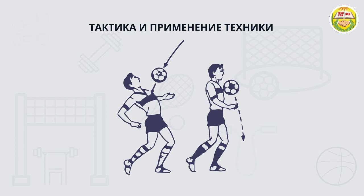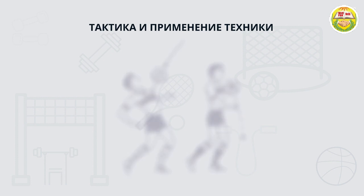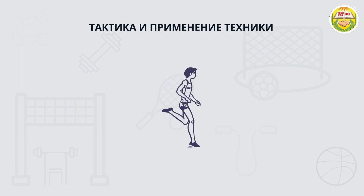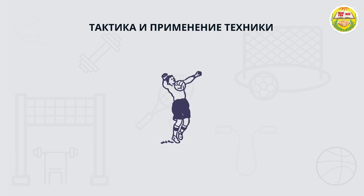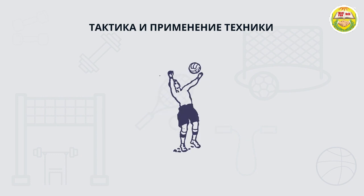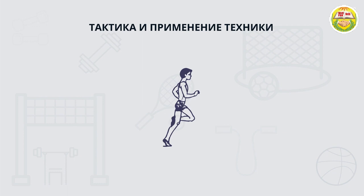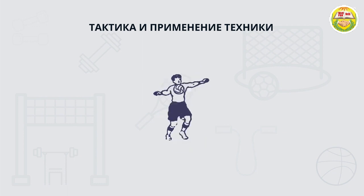Следующее упражнение — набрасывание мяча в разных положениях. Попросите партнера набросить мяч рукой с расстояния 4-8 метров по крутой траектории. Стоя на месте, вы должны останавливать мяч грудью. Следующая техника делается точно так же, однако прием мяча осуществляется, когда игрок разбежится на 2-3 шага.